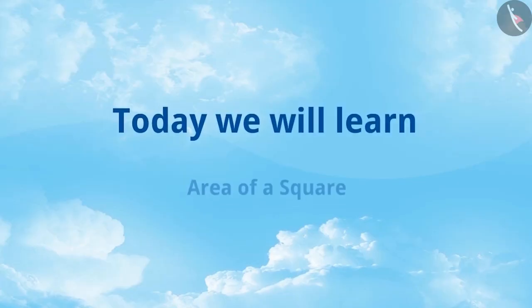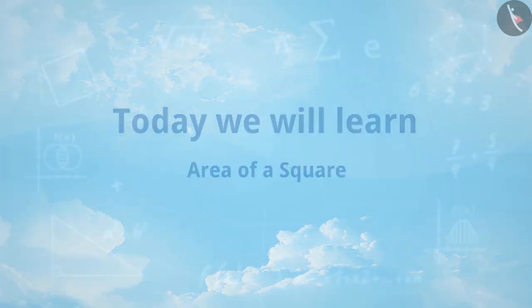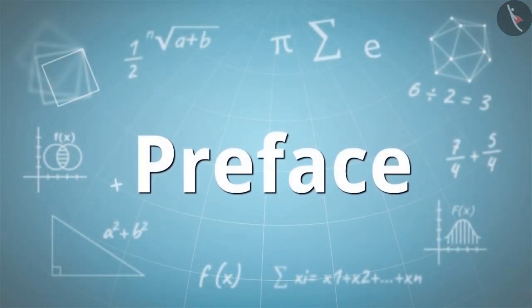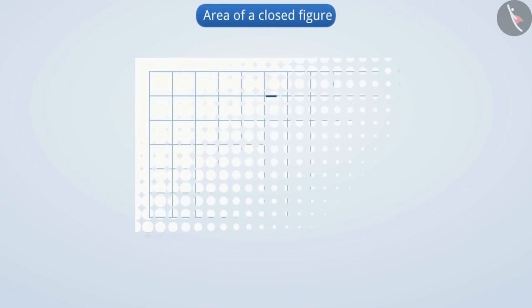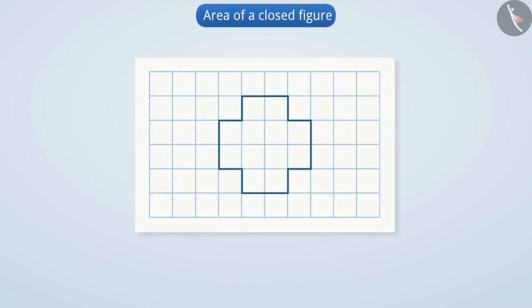Today we will learn about the area of a square. We learned that area is the amount of surface enclosed by a closed figure. We also know the number of squares enclosed in the whole region represents the area of that figure.